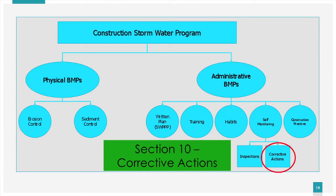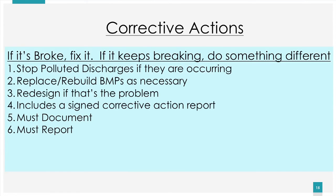When you see something wrong, you fix it. Section 10 establishes the timeframes for how quickly those corrections need to occur. Corrective actions are done to repair, modify, or replace a BMP, remedy a permit violation, or properly dispose of spills. Your report must be signed by the certifying person or duly authorized representative and kept on site. It does not need to be submitted to the Department of Health unless you've had a violation of the basic water quality criteria, in which case the more stringent requirement applies and reporting is required.